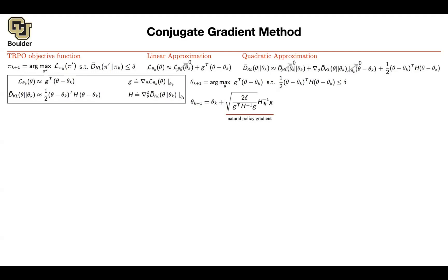The solution is H-inverse times g — you take a step in that direction. This is very similar to gradient descent, but now your step direction depends on the Hessian, making it a second-order method. The step size can actually be found analytically because the problem is simple. So that gives you theta-k-plus-one. But there is a problem.